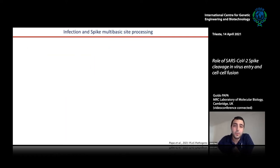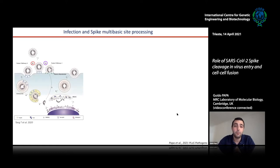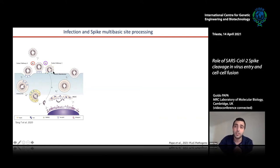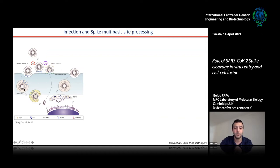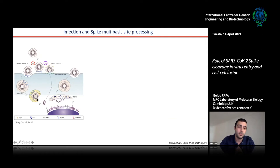We then asked: what is the relationship between spike cleavage and infection? Coronaviruses can enter cells via two different routes. The first is fusion at the plasma membrane, where TMPRSS2 cleaves the S2' site, exposes the fusion peptide, and releases the genome into the cell. The second is the endosomal route, where after receptor attachment the virus is incorporated into endosomes, where cathepsins — less specific proteases — can cleave the spike at multiple positions, ultimately exposing the fusion peptide and allowing fusion with the endosomal membrane.